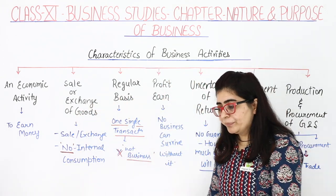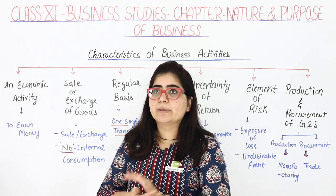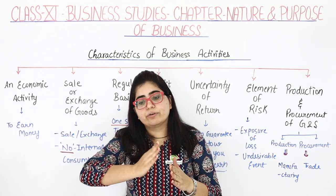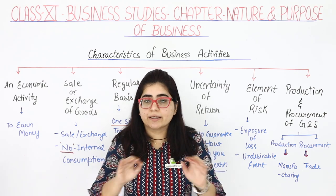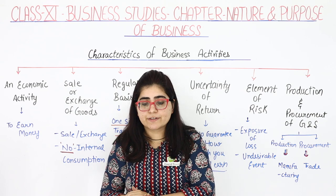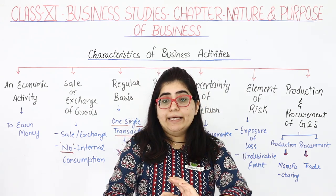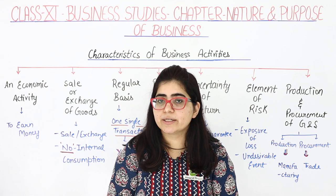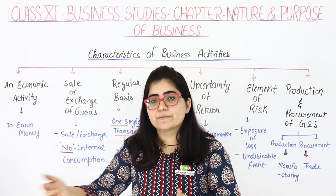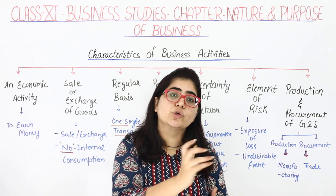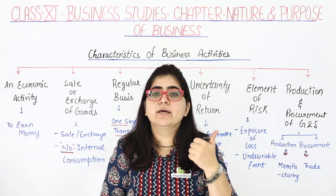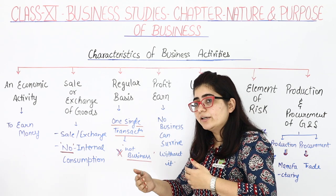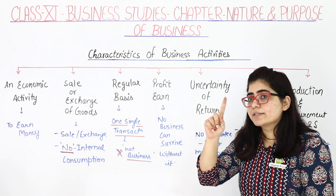Third characteristic is regular basis. If you do one transaction and think of yourself as a businessman, you are wrong — because business activity must happen on a regular basis. For example, if I made cookies once and sold them in a single transaction, I would not be called a businesswoman. But if I make and sell cookies on a daily or regular basis in a market and earn money, then that qualifies as a business. So it is very important that activities are done on a regular basis, not just a single transaction.